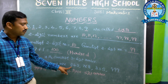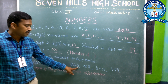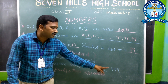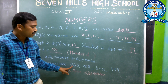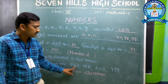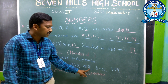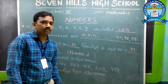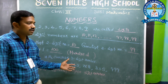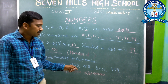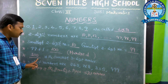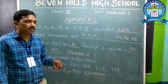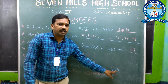Examples of 3-digit numbers are 243, 768, 835, 999. Each has 3 digits — 1, 2, 3. So these are 3-digit numbers. The smallest 3-digit number is 100. The greatest 3-digit number is 999.